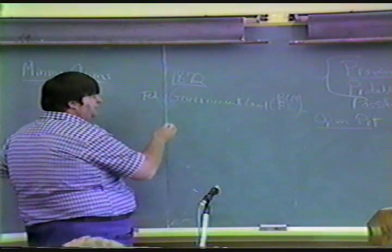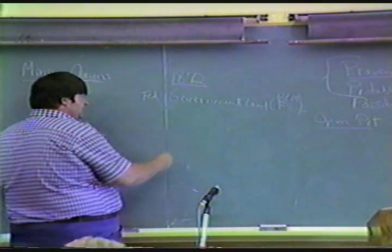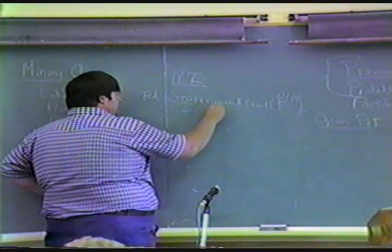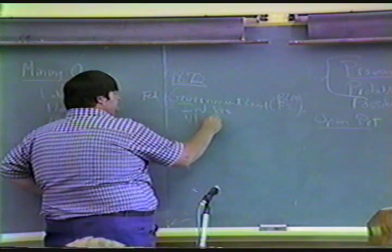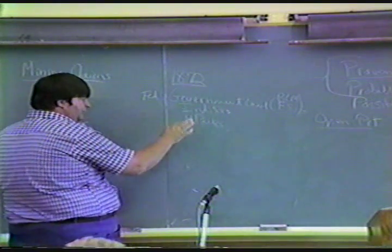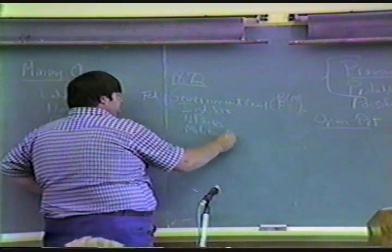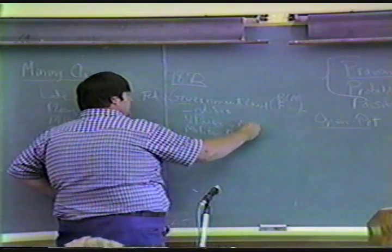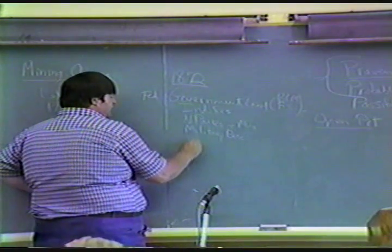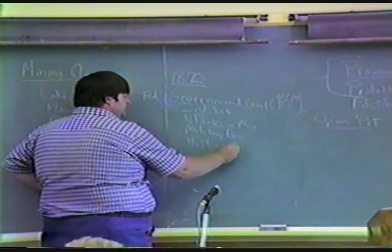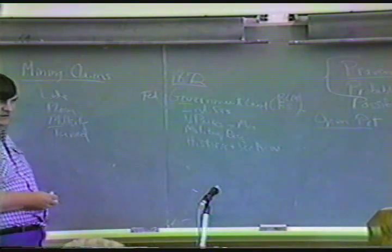Now, since that time there have been various withdrawals — taking away land open to mineral entry for various purposes. These would include Indian reservations, where you would have to deal with the Tribal Council; national parks; military bases; and historic and scientific areas. Right here in California we would have the California Desert Tortoise Preserve.